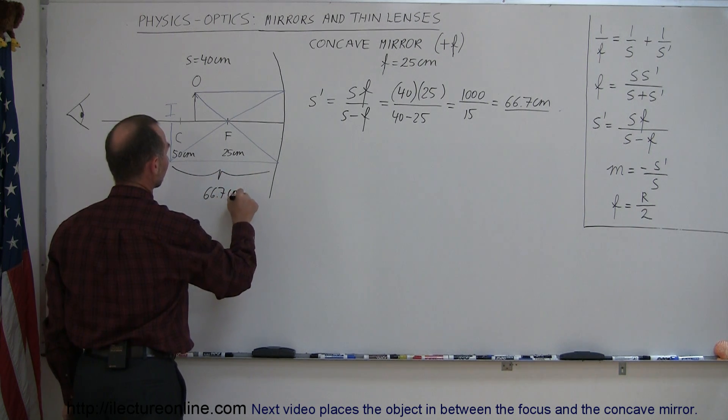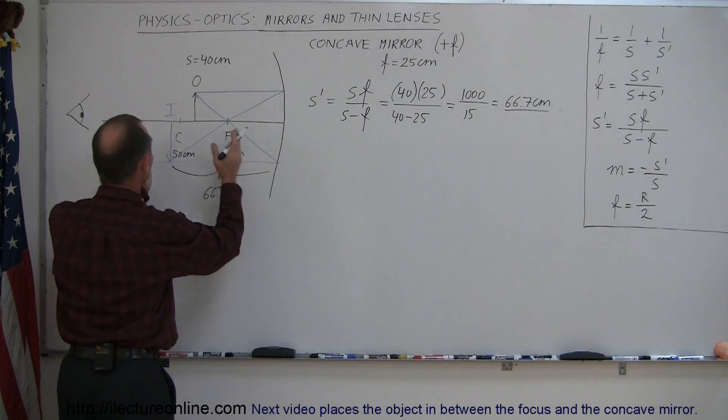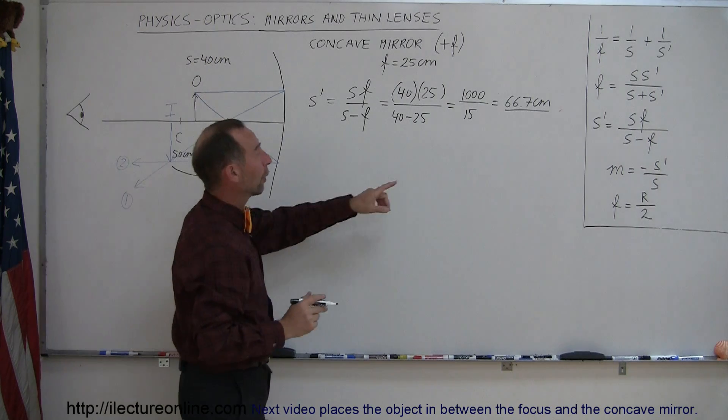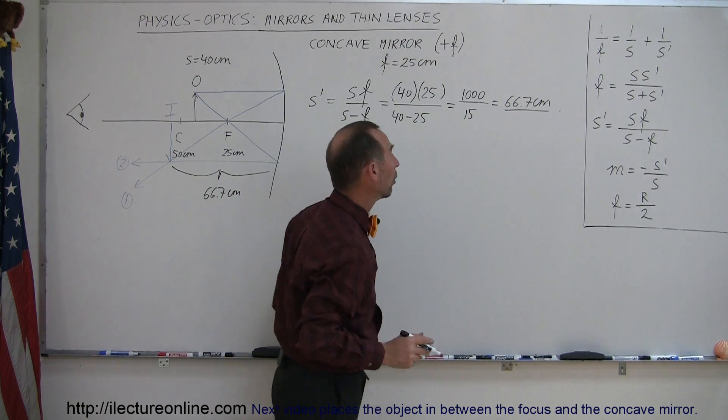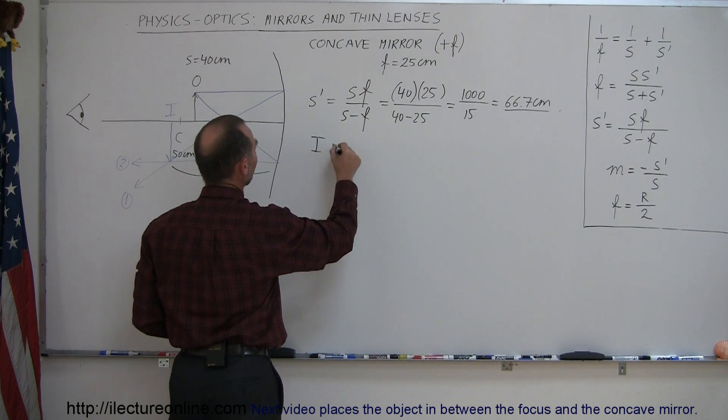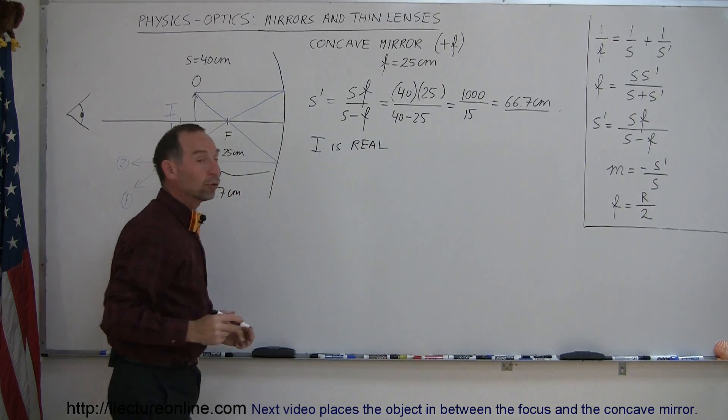Is it real or is it virtual? Well, the fact that it is in front of the mirror would make it real. Another way to look at it is that it's a positive quantity right here, so this is positive. We now know that the image is real, so I is real.